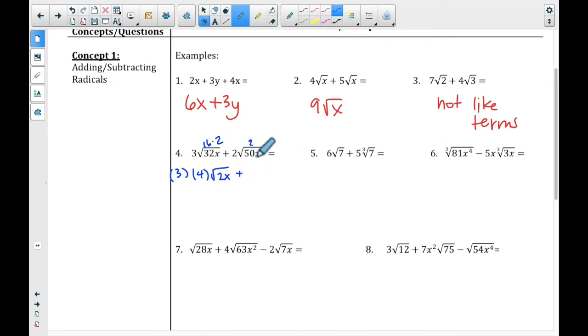And 50, that is 25 times 2, so that's 5. So we have a 2, we have a 5, and we have a radical 2x. Okay, so if we simplify this, this is 12 radical 2x, and this is 10 radical 2x. Those add together to be 22 radical 2x.